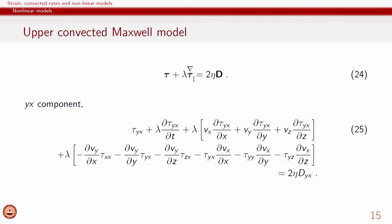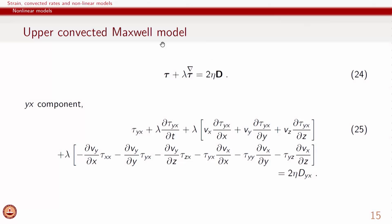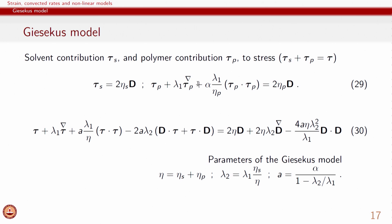We have seen that the upper convected Maxwell model shows no shear thinning or shear thickening — viscosity is constant in steady shear. Similarly, the normal stress difference for the upper convected Maxwell model was proportional to strain rate squared, while we know the actual relationship is far more complicated. So the upper convected Maxwell model shows certain features of nonlinear response but is grossly inadequate. On the other hand, Giesekus's model seems to have a reasonable set of nonlinear responses which many realistic materials also show.